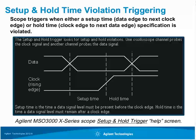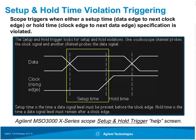Now we're going to talk about setup and hold violation triggering. The help screen shows exactly what this trigger does. When data is transferred from one device to another, it is often clocked in. The data signal must be stable — either high or low — a minimum amount of time before the clock edge; this is called the minimum setup time. The data signal must also remain stable for a minimum amount of time after the clock edge; this is called the required hold time. We'll now see an example of viewing a setup time violation using edge triggering on the clock, and then use setup and hold time violation triggering to synchronize acquisitions on all setup time violations.